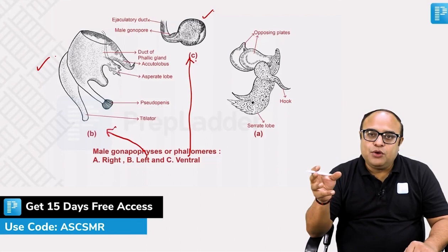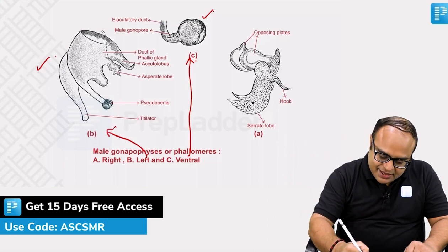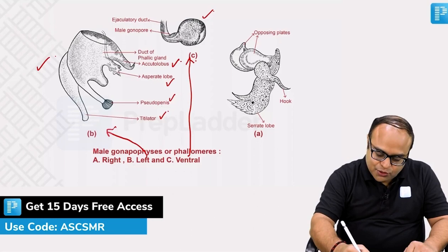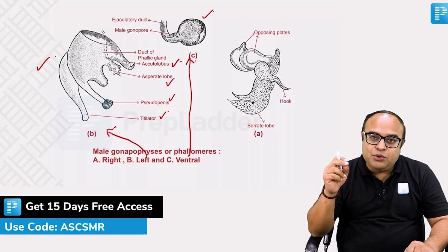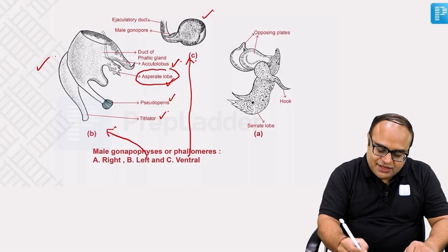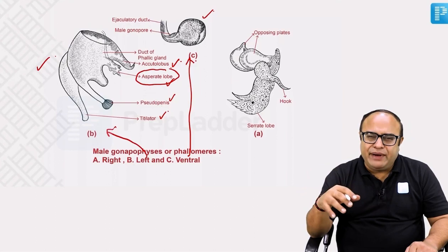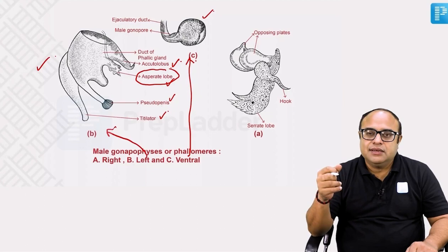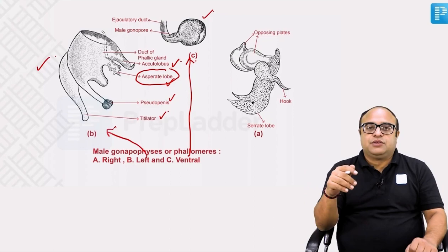The phallic gland opens into the ventral phallomere. More specifically, the phallic aperture opens into the asparate lobe. This level of detail is for students who want to study everything about the cockroach in depth.